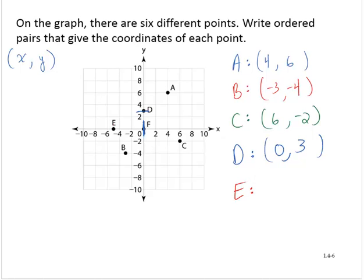Point E has an x-coordinate of -5 and a y-coordinate of 0.